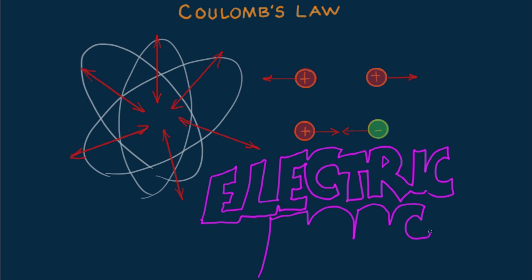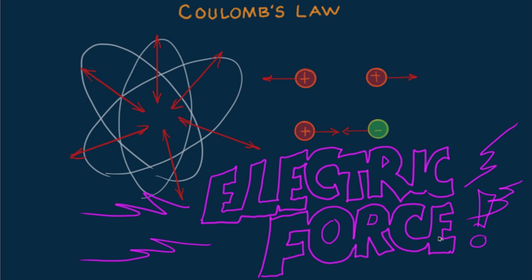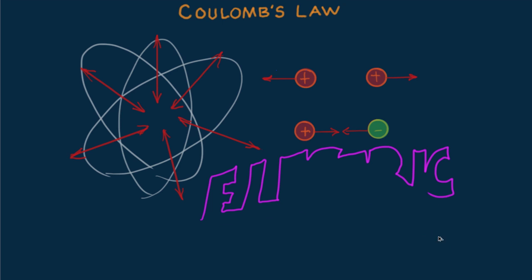The electric force between things balances out because of equal numbers of positives and negatives. All things around us attract one another electrically, but repel one another just as much. That's why the enormously strong electric forces between Earth and Moon have been balanced out.